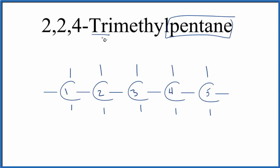But this tri means we have three of these methyl groups, and they're going to be on carbons 2, 2, and 4. So here's our second carbon. We'll have a methyl group here and here, and then we'll have one on the fourth carbon.